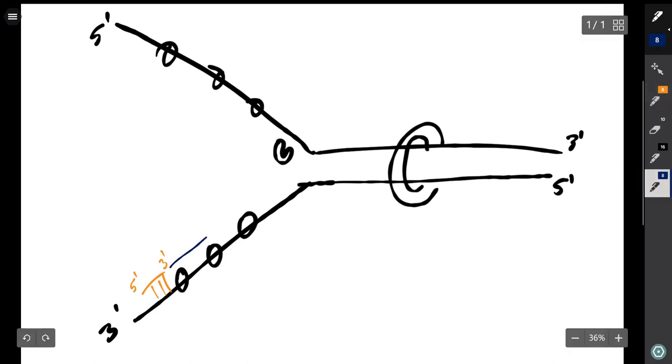DNA polymerase 3 will then synthesize new DNA in the 5 prime to 3 prime direction on the bottom strand. This is known as the leading strand where DNA is being synthesized continuously.